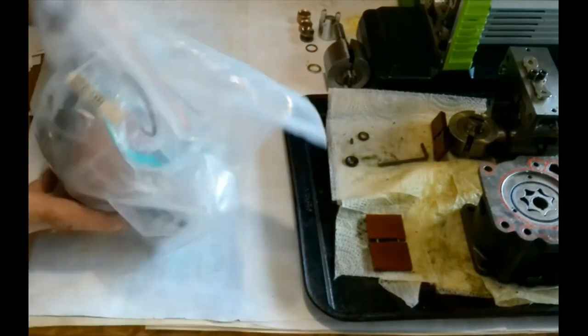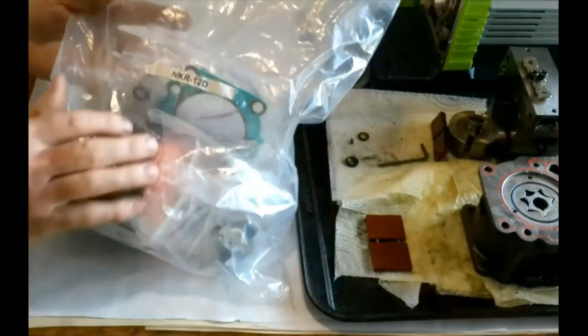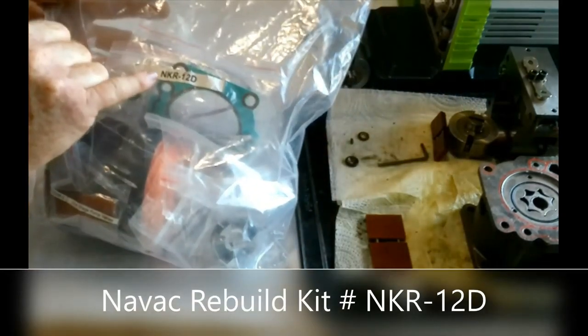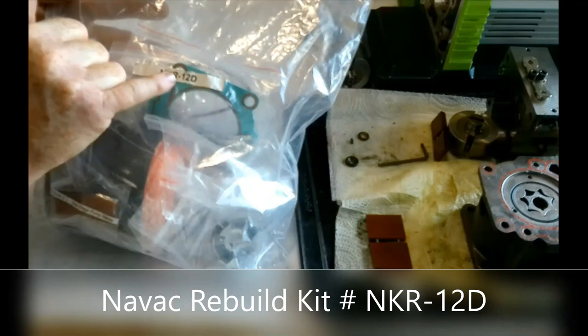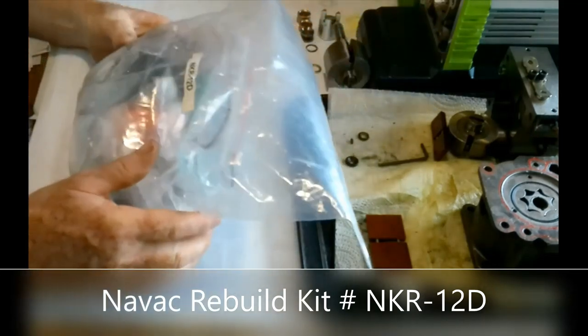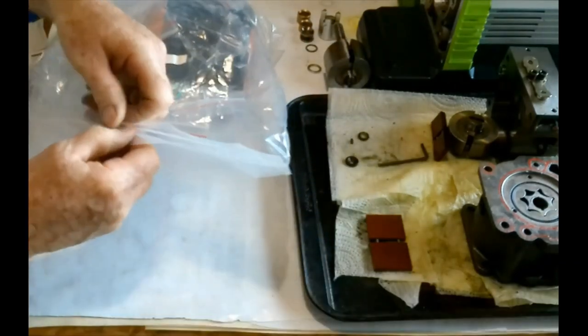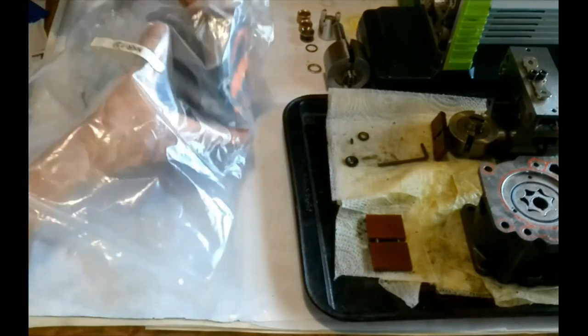It virtually was in a Ziploc bag. This is part number Nancy Kilo Roger-12 Delta for their 12D vacuum pump. If we open this up, we'll see what parts are inside.